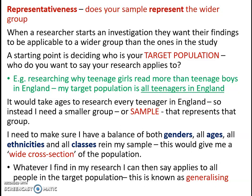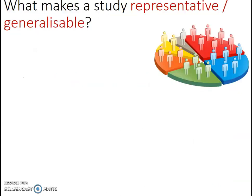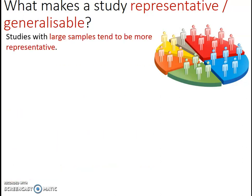This is what's known as generalising — when you generalise your findings to the rest of the target population beyond your sample. What makes a study representative or generalisable? The larger the sample, the more representative. If you can find a method that makes it easy to get a large sample, your research is much more likely to be representative.